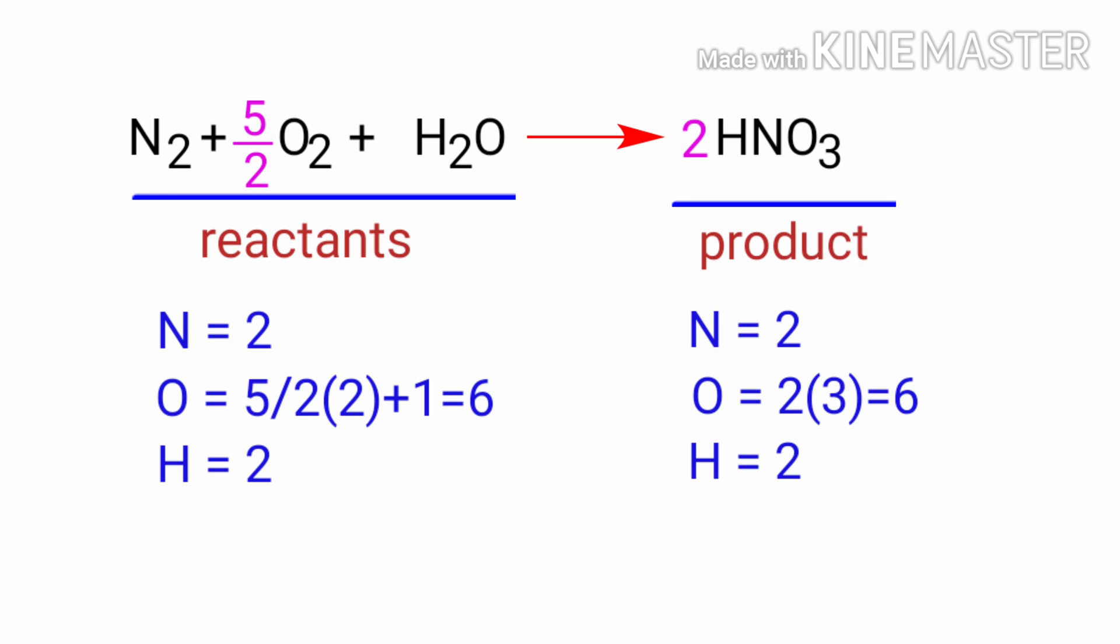In this equation, 5 by 2 is a rational number. We don't use rational numbers for a molecule. So to get whole numbers, we need to multiply the equation by a coefficient of 2.